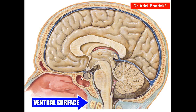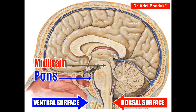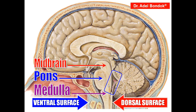This is the ventral aspect of the brain stem, and this is the dorsal aspect of the brain stem. The brain stem has three parts: midbrain (upper part), pons (middle part), and medulla (lower part), and this cavity is the fourth ventricle. I will talk about the ventral surface and the dorsal surface.